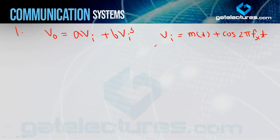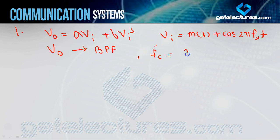The output of the non-linear system is passed through a band pass filter to select the DSBSC signal. So V0 is being passed through the band pass filter in such a way that the DSBSC signal is generated. We need to find the value of FX, given that the carrier frequency of the DSBSC signal is 2 MHz.